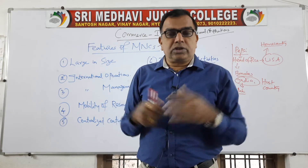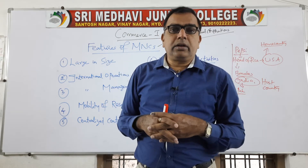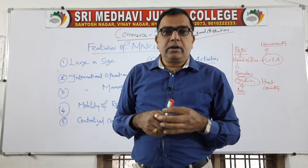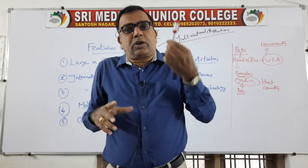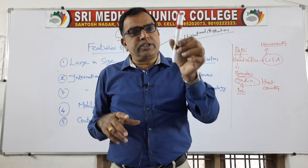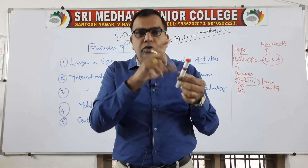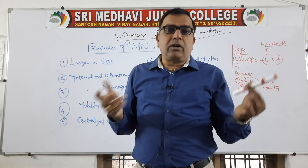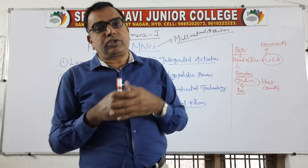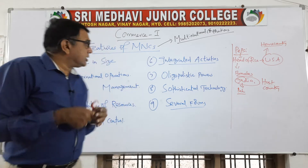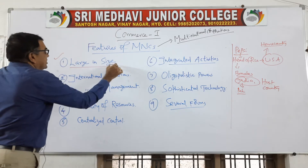So how do you identify a multinational corporation? What are the main features or characteristics? Just like you identify a marker by its colour and shape, those are called features. Similarly, multinational corporations also have certain features. The first feature of a multinational corporation is that it is large in size.